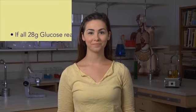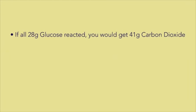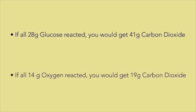So, which one gives you less product? This is your limiting reactant. If all the grams of glucose reacted, you would get 41 grams of carbon dioxide. If all the grams of oxygen reacted, you would have 19 grams of carbon dioxide. Therefore, the amount of oxygen limits how much products you can make. In other words, you will run out of oxygen before you run out of glucose.